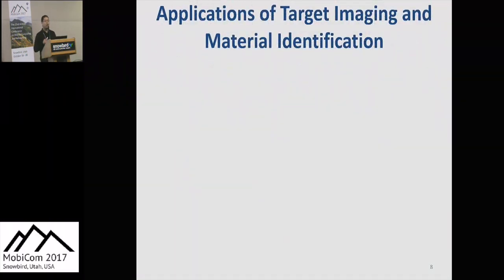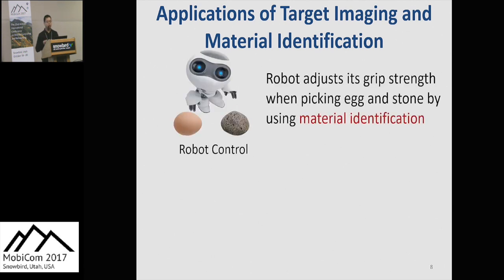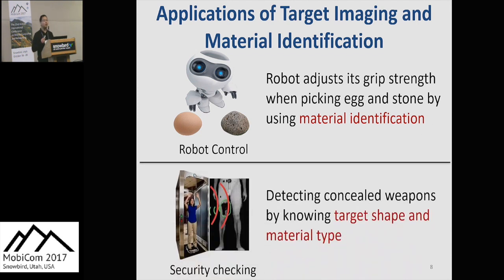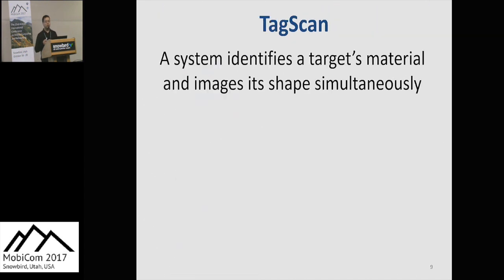Many applications would benefit from knowing the target shape and material type. For example, with material identification, a robot can automatically adjust its grip strength when picking eggs versus stone. Also, detecting concealed weapons at security checkpoints would be possible by knowing the target shape and material type. So we present TagScan, a system that can identify a target's material and image shape simultaneously.